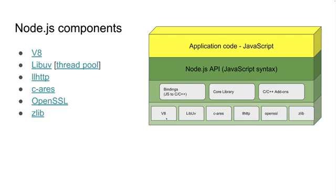LLHTTP is a module — it was the HTTP parser module. For HTTP, when we make an HTTP request, we stream and buffer-convert it into an actual object. When we send a response, we convert the response back into a buffer. That's what this module handles.